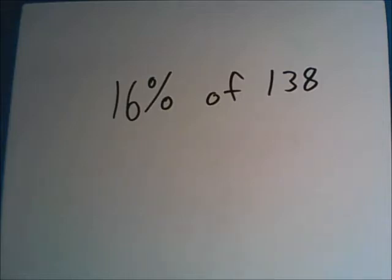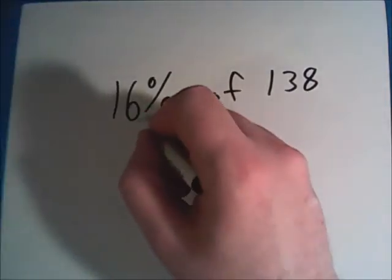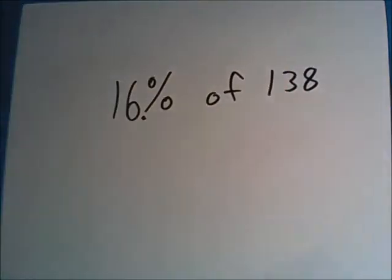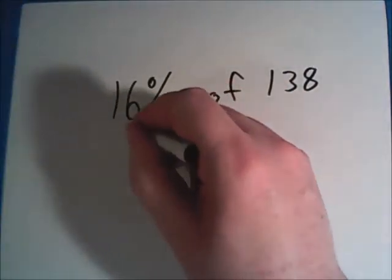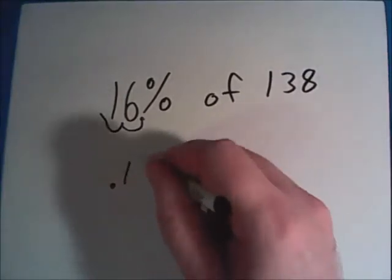Here, all you'll have to do is take this percentage and change it to a decimal. We do this by moving the decimal point in the number 16, which is assumed to be behind the 6, and move it two places to the left. One, two, making it .16.